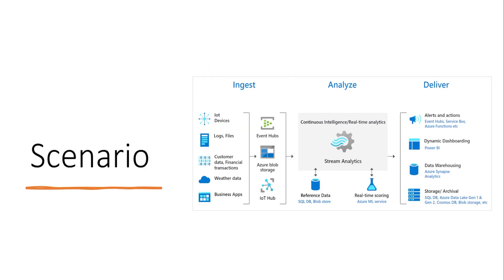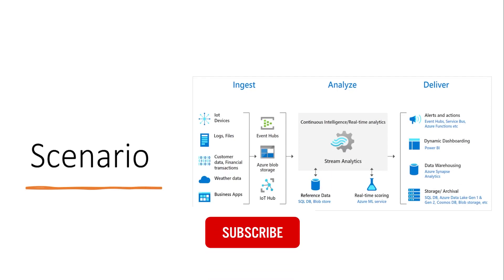Looking at a reference architecture: IoT devices, log files, customer data, or financial transactions have their data ingested using one of the ingestion services — either Event Hub, IoT Hub, or Azure Blob Storage. Azure Stream Analytics connects with these input sources, where we can write SQL-related queries, call Azure ML services, or use Azure Function Apps. We can reference data stored in SQL DB or Blob Store, and then send output to other services for alerting, dynamic dashboarding, or store data into data warehousing such as Synapse Analytics.